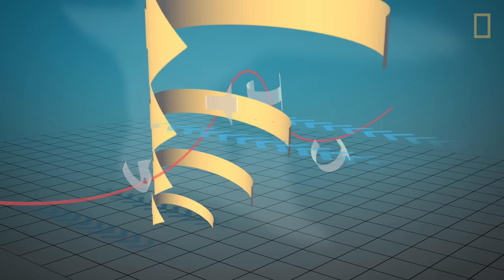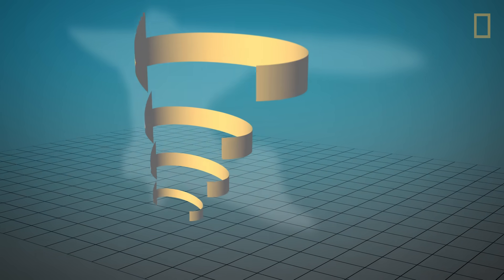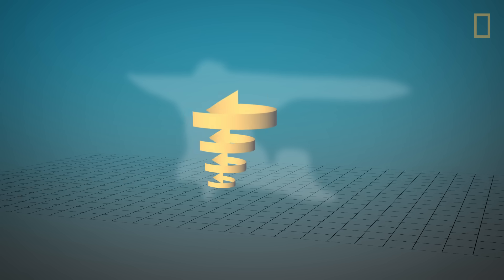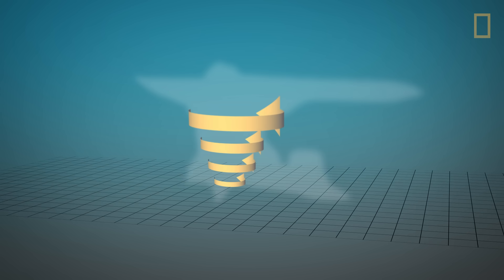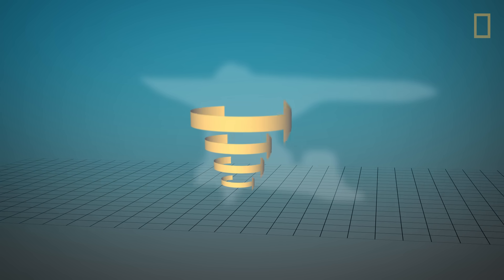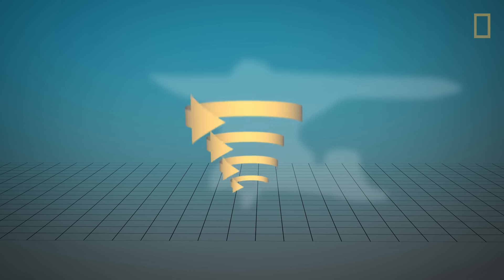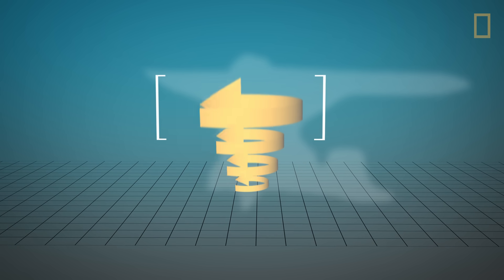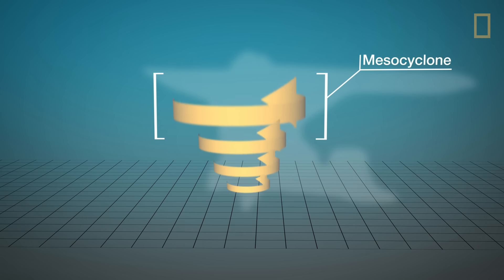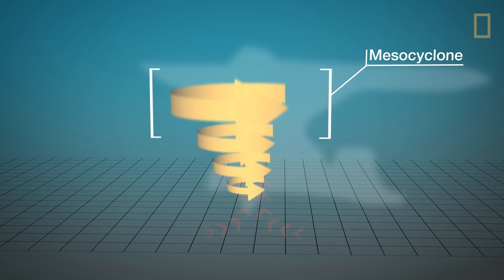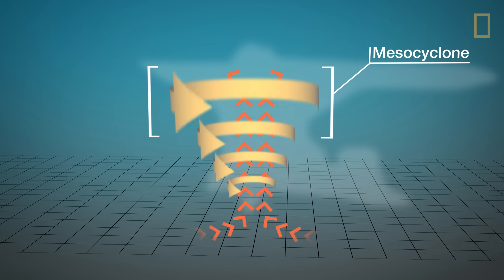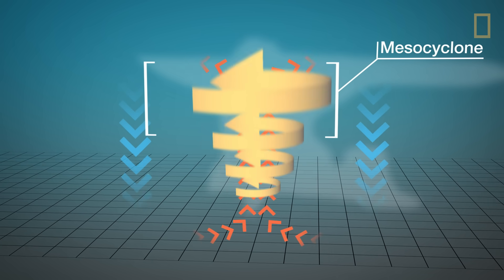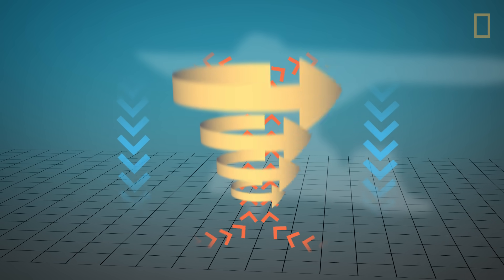The vortex extends toward the ground. As it picks up speed, anything in its path can be ripped apart or thrown in the air. Upper-level winds tilt the rotating updraft, called a mesocyclone. This allows the storm to keep growing as warm air is sucked into the storm away from the cool downdraft.